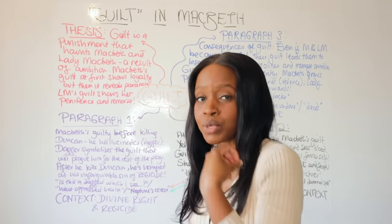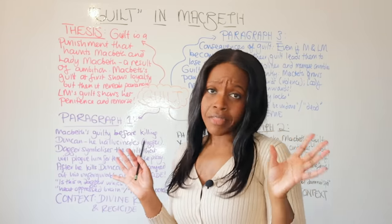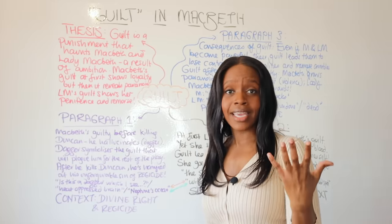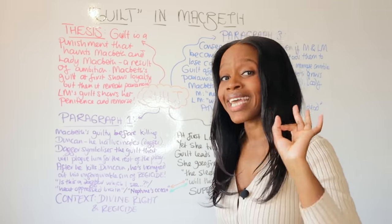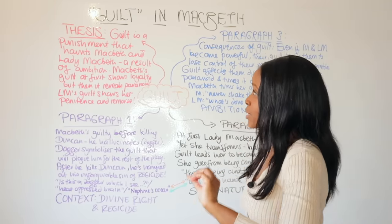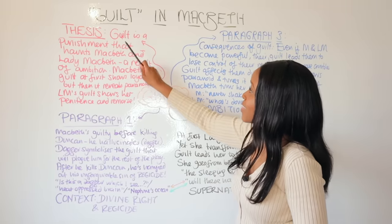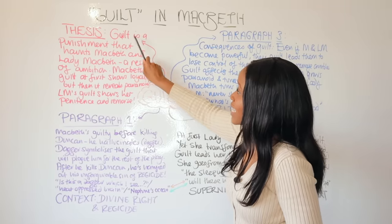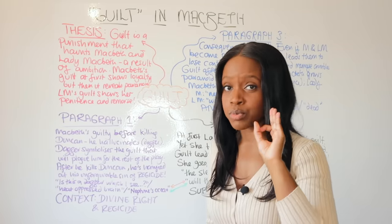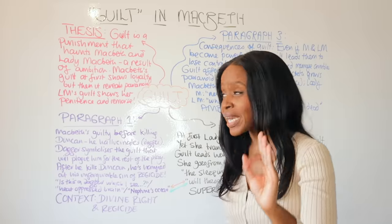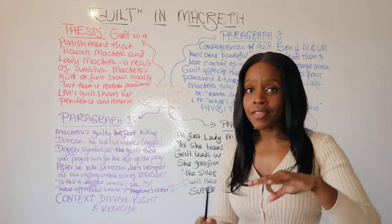So, if guilt is the GCSE question that comes up this year, how can you go beyond simplistic statements? Make it really clear in your introduction and thesis statement that the theme of guilt is used by Shakespeare as a punishment — guilt is presented as a punishment that plagues and haunts both Macbeth and Lady Macbeth as a result of their ambition and lust for power.